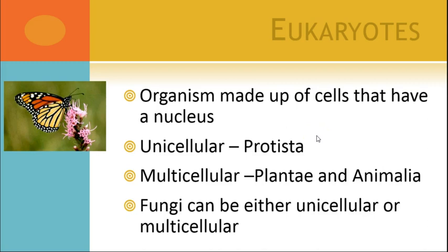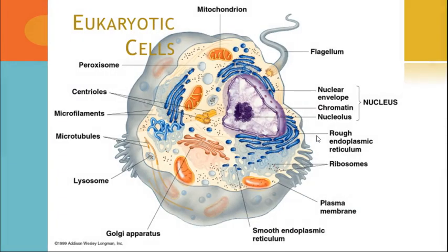Eukaryotes — and that's what we're going to be dealing with because we're made up of eukaryotic cells. These are organisms that have a nucleus and membrane-bound organelles. The key feature is the actual, formal nucleus. They can either be unicellular, as in the case of the protists, or they can be multicellular — plants and animals are good examples. And fungi can either be unicellular or multicellular.